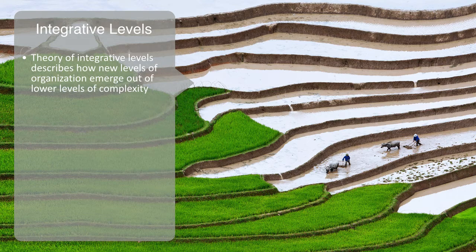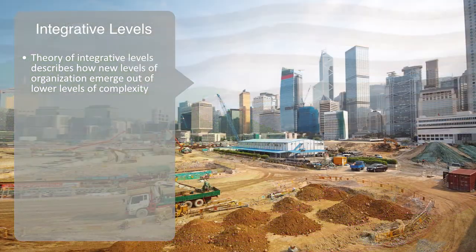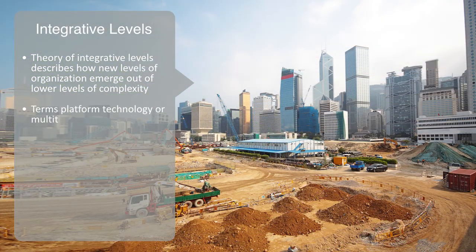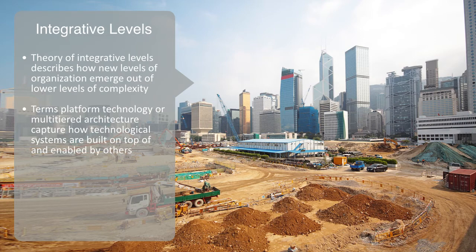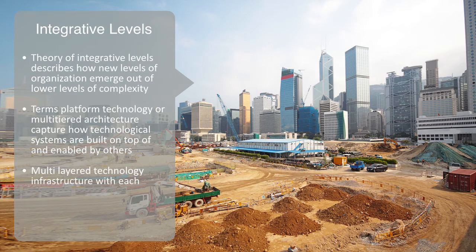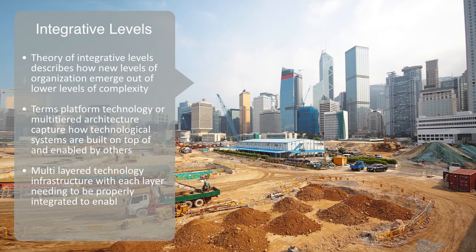A mobile phone without any farms to feed us would be pretty useless. The terms platform technology or multi-tier architecture are used to capture how technology systems are built on top of and enabled by other technologies. A functioning urban center that provides a high quality of life to its citizens is an emerging property of multiple layers of technological infrastructure. Each layer needs to be properly integrated to enable the technologies it supports.